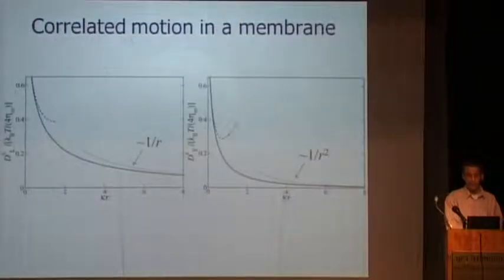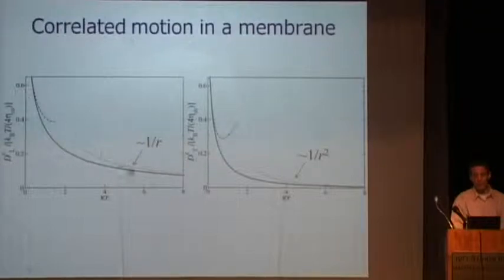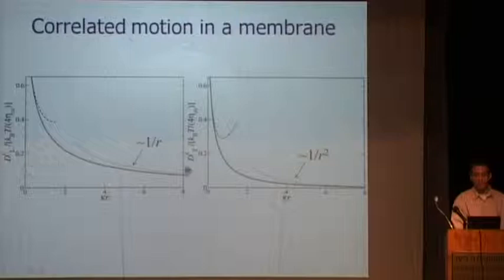This is a graphical representation of the full solution. You can see the logarithmic asymptote at small distances and the 1/R asymptote at large distances, depicted here for both the longitudinal and transverse coefficients.